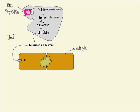The bilirubin is transported into the hepatocyte where it is conjugated and thereby made water-soluble by UDP glucuronyl transferase.